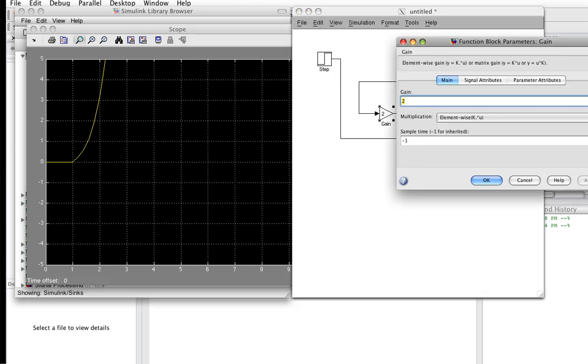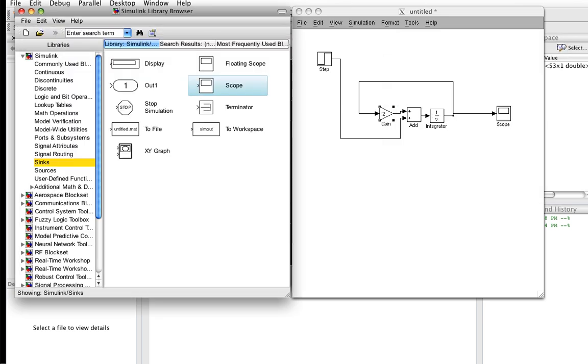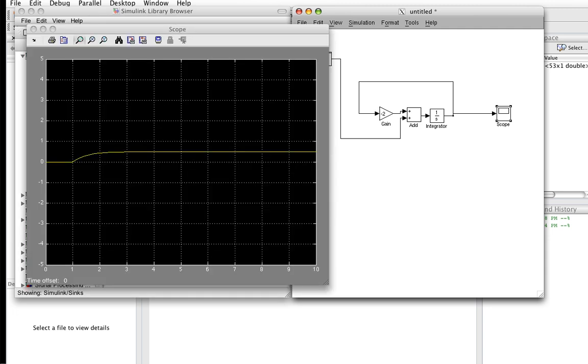So let's change our gain, say, to minus 2. So we've changed the gain to minus 2. We start our simulation again. It runs.